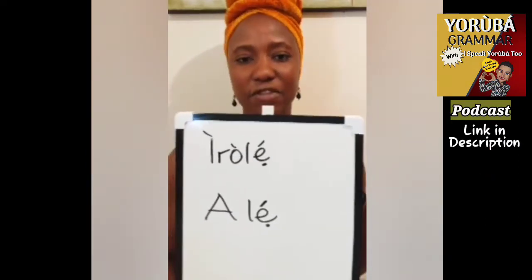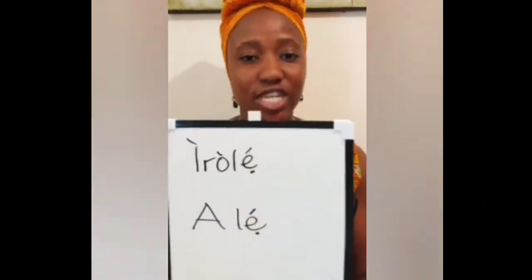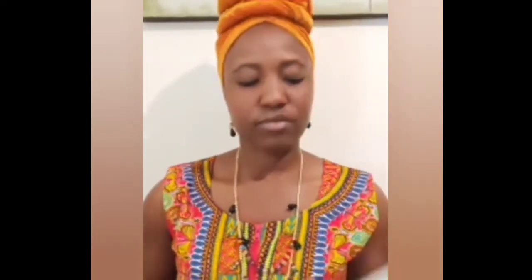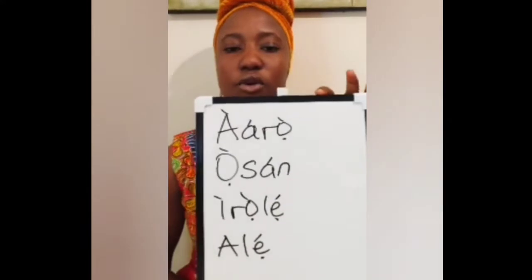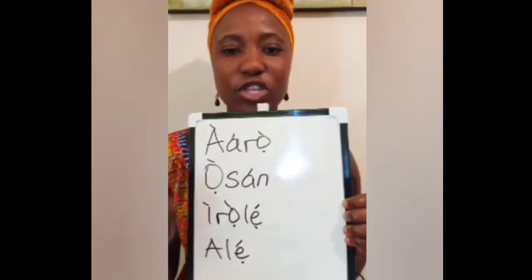Morning, afternoon, evening, and night — ARO, OSAN, IROLE, and ALE. I'm going to write everything out so you can see. So we have ARO, OSAN, IROLE, and ALE — can you see that? ARO, OSAN, IROLE, ALE — with the tone marks on them.